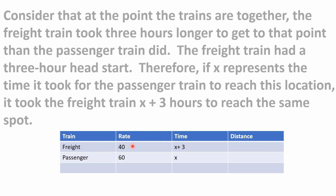For the freight train, we know it was going 40 miles per hour, and we've decided the time it took to reach the overtaking point is x plus 3 hours. The passenger train is traveling at 60 miles per hour, and we've set x equal to the amount of time it took the passenger train to get to that point.